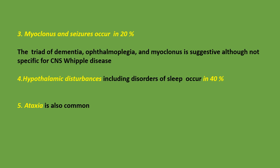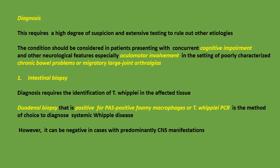Hypothalamic disturbances, including disorders of sleep, occur in 40%. Ataxia is also common. Diagnosis requires a high degree of suspicion and extensive testing to rule out other etiologies. The condition should be considered in patients presenting with concurrent cognitive impairment and other neurological features, especially oculomotor involvement, in the setting of poorly characterized chronic bowel problems or migratory large joint arthralgias.